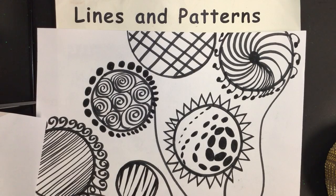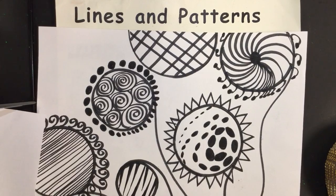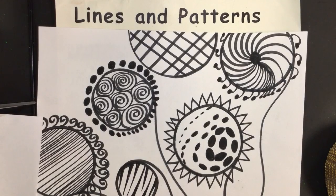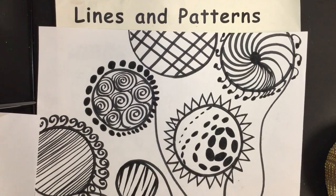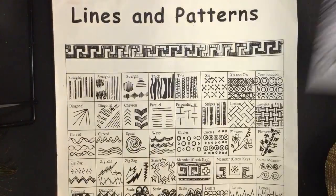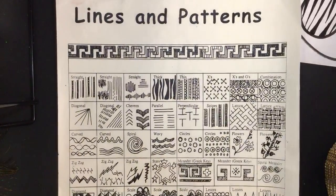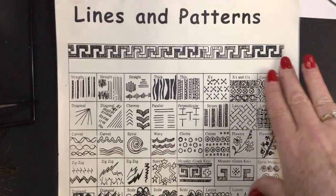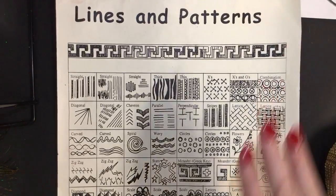Today's lesson is on lines and patterns and we're going to be making some circular designs filled with line and pattern. We want to try and invent our own lines and patterns, but let's look and see first what lines and patterns are and then look into nature to see some lines and patterns there to help inspire our designs. There are all different kinds of line and pattern that you can combine and invent your own.